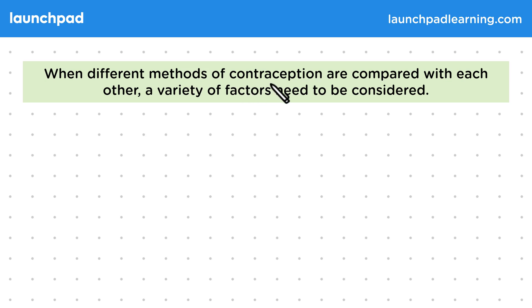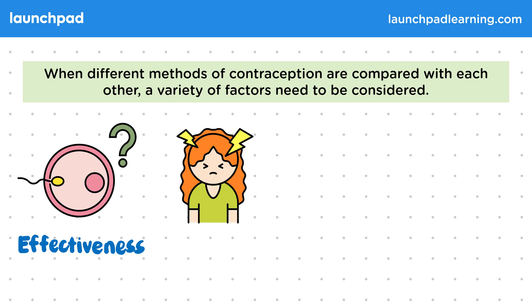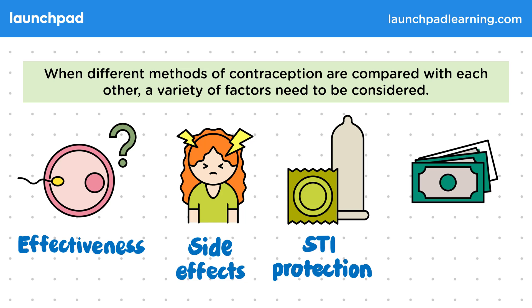When different methods of contraception are compared with each other, a variety of factors need to be considered. For example, different contraception methods have different levels of effectiveness, they also have different side effects. Certain barrier methods such as condoms protect against STIs or sexually transmitted infections.